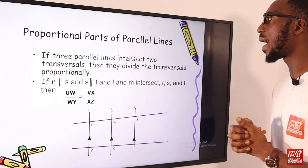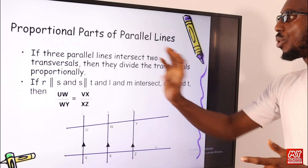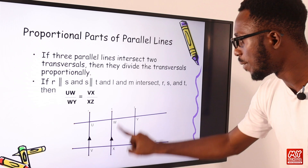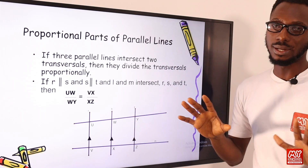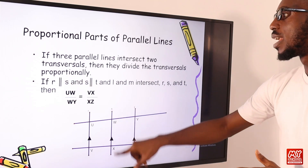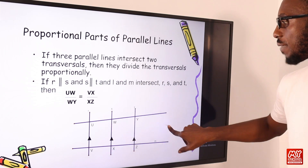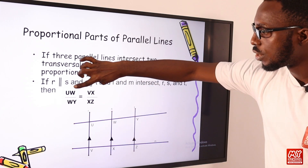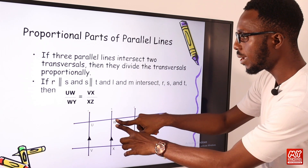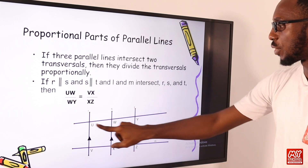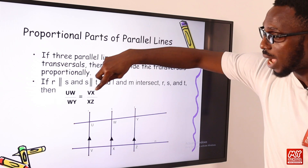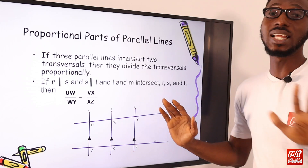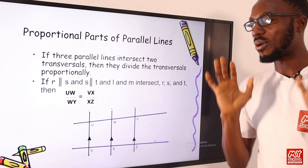We are talking about the proportional parts of parallel lines. If three parallel lines intersect a transversal, they divide the transversal proportionally. So if R is parallel to S and S is parallel to T, and they intersect transversals I and M, you can see UW and VX — their ratios correspond proportionally. This is the work of three parallel lines intersecting a transversal, and examples will be used to explain this concept well.